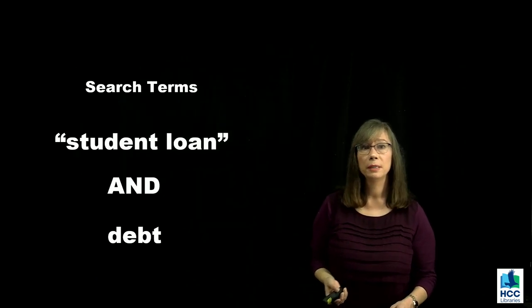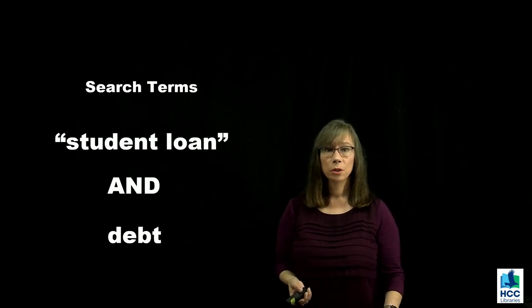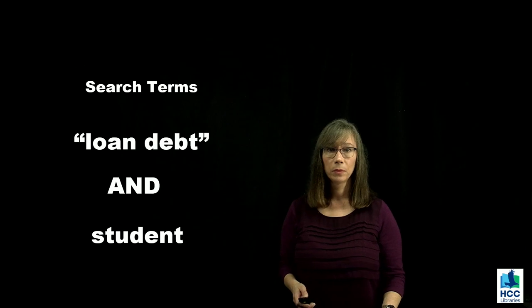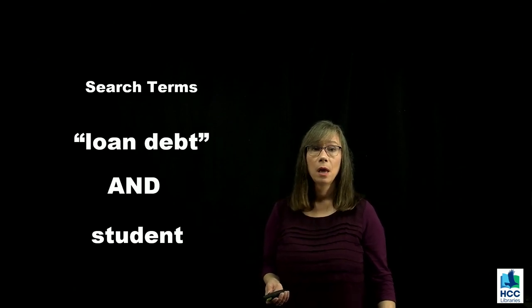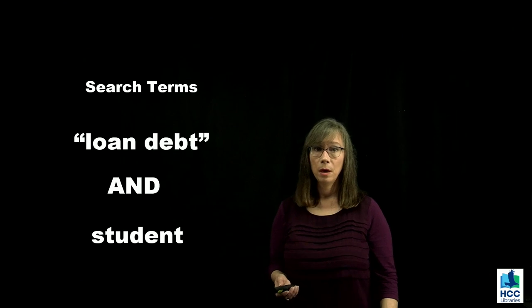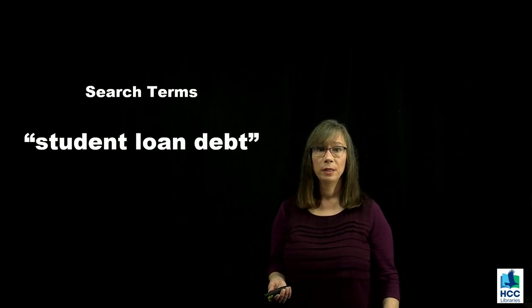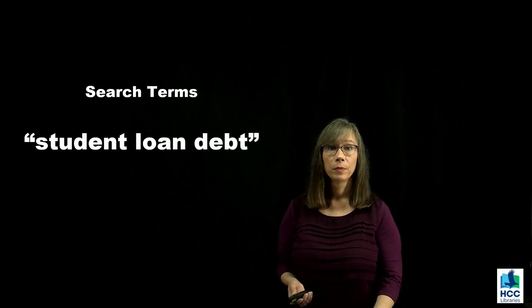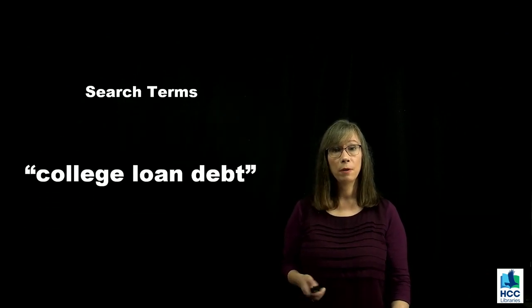If typing in your search term one way does not produce the results you want, try something different — break your search terms apart. In this example, I used student loan in quotation marks and added a second search term box with debt on that second line. Do not be afraid to change your search terms around even more. For example, by typing loan debt and student, loan debt becomes the main topic and student becomes a secondary search term. Think back to brainstorming: switch out student for college as a search term to achieve different but relevant results.